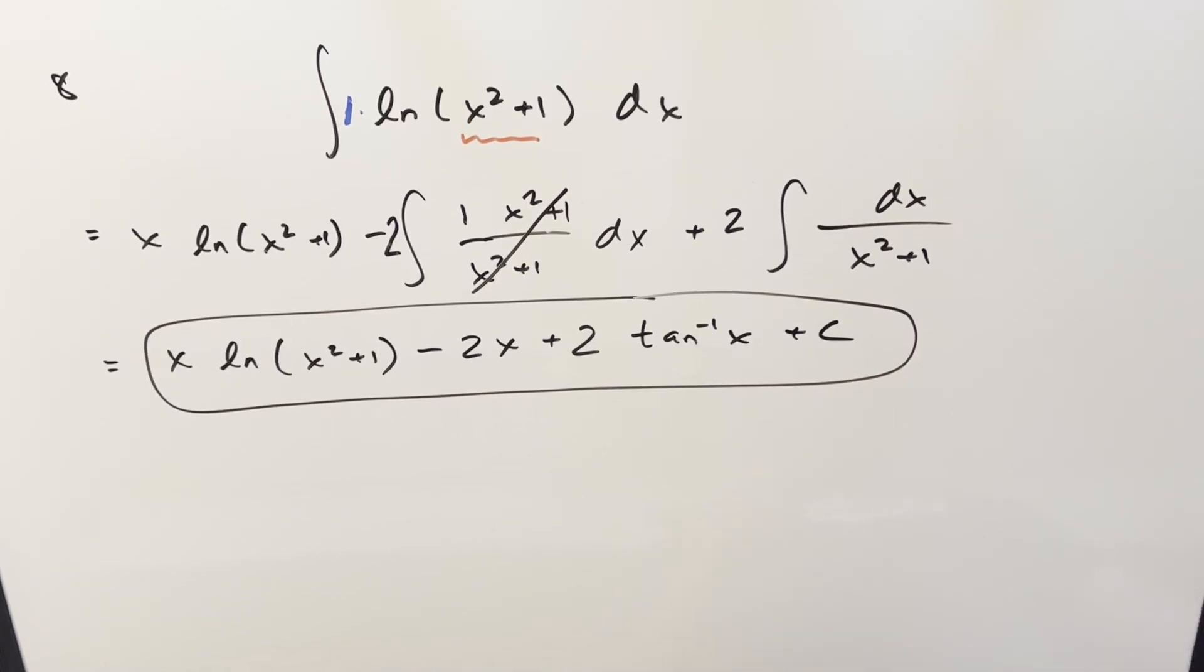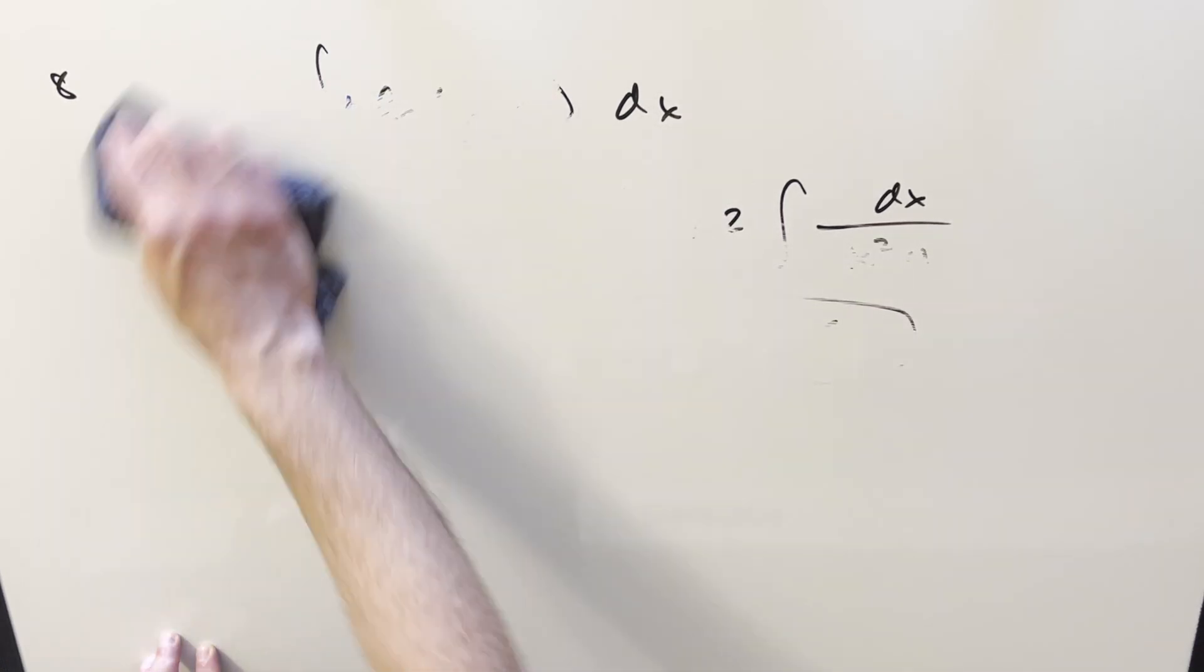Wow, so that one was actually almost too easy. If I had another problem ready, I would just do that. Let's see if I can find another problem. Let's go backwards and do number 2 really quick. I don't usually do this, but we'll do number 2 from MIT 2020.